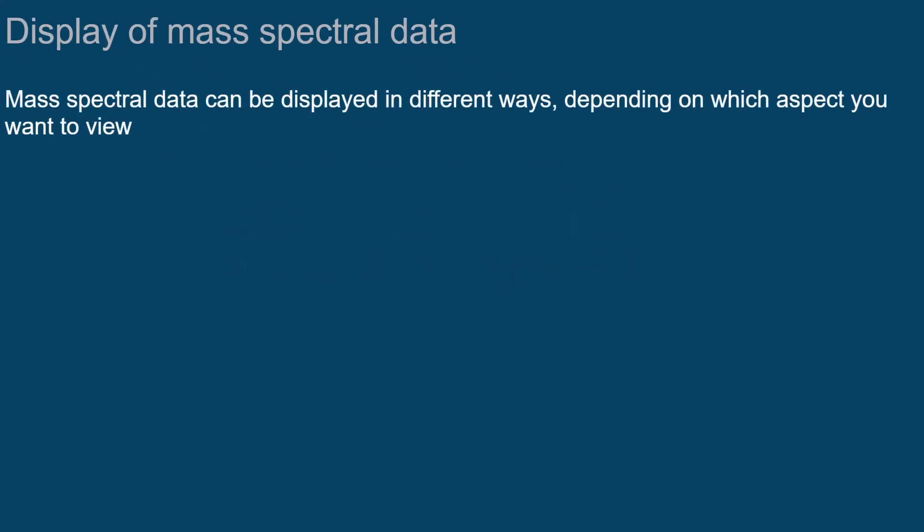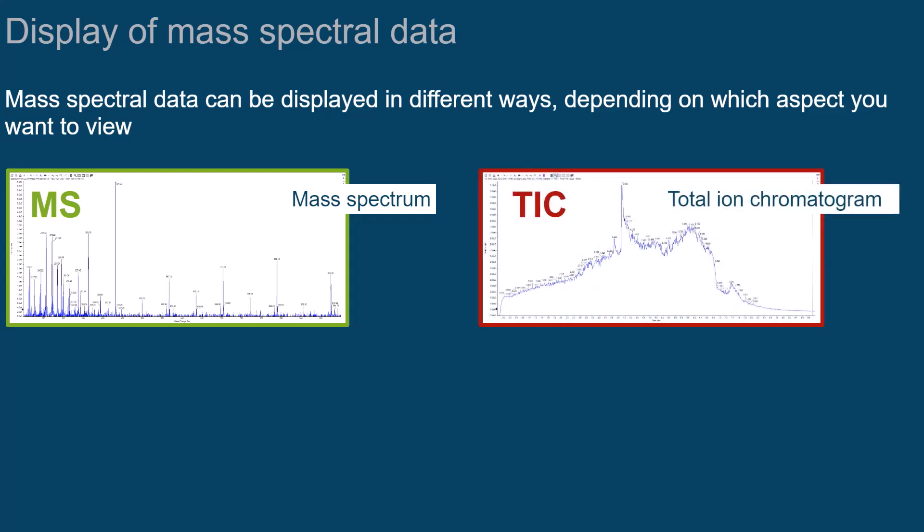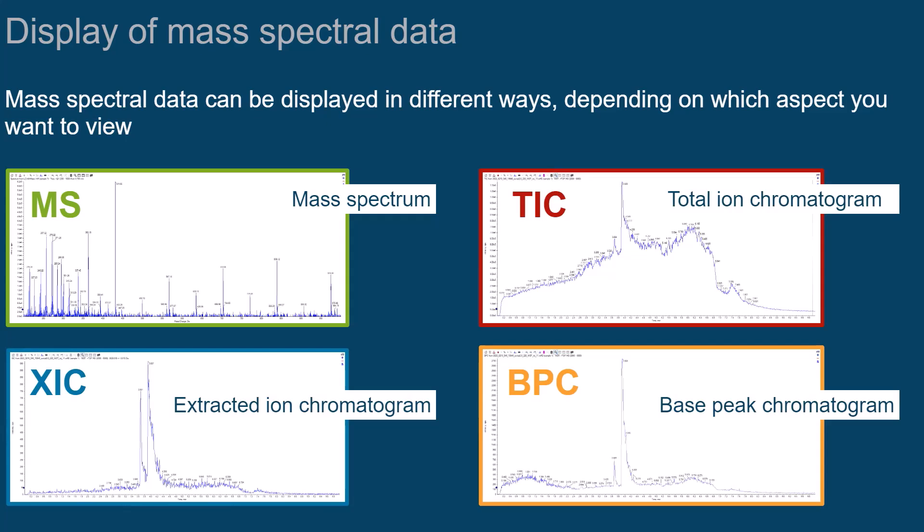Mass spectral data can be displayed in different ways, depending on which aspect you want to view. We distinguish between the mass spectrum, the total ion chromatogram, extracted ion chromatogram, and the base peak chromatogram.